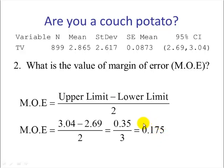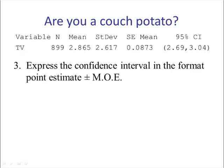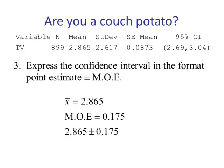You may ask how many decimal places to use. If it doesn't specify, usually we take one more decimal place than what's given. The confidence interval is given to two decimal places, so we want three. Number 3: express this as point estimate plus or minus margin of error. X-bar is 2.865 and margin of error is 0.175, so we have 2.865 ± 0.175.